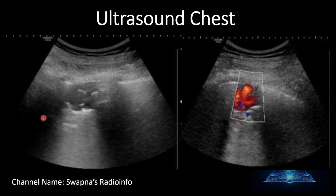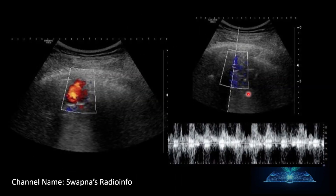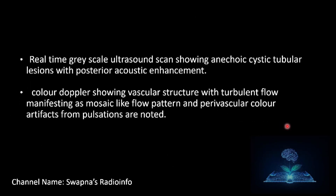Next, ultrasound of the chest was done. It shows anechoic tubular cystic lesions with posterior acoustic enhancement. Color Doppler shows increased mosaic color uptake. On spectral Doppler, a vascular structure with turbulent flow manifesting as a mosaic flow pattern and perivascular color flow artifacts from pulsations were noted.